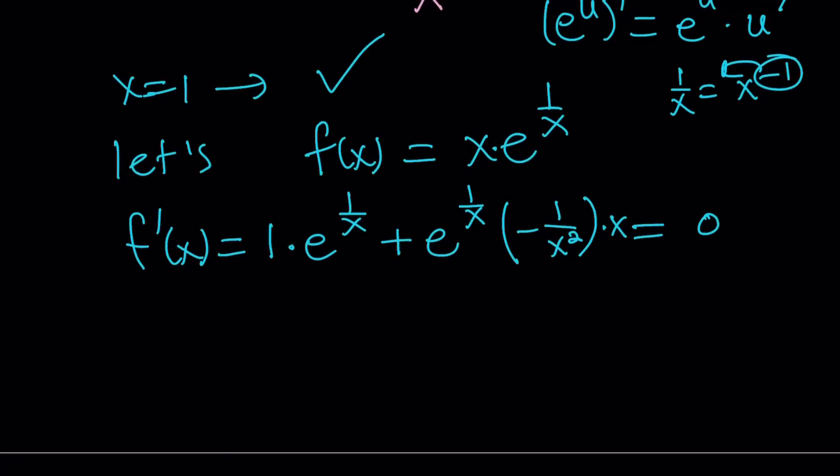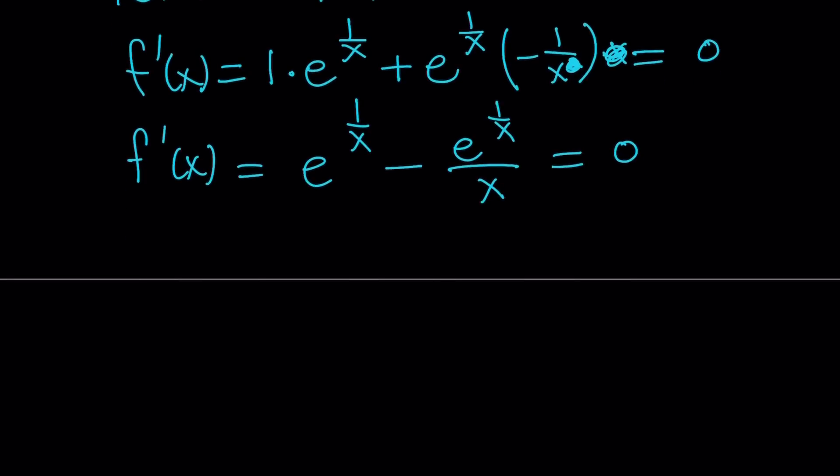Okay, so now, if you simplify this, x obviously is positive, it's not 0, so we can cross out the x's, and then we get f prime of x is equal to e to the power 1 over x minus e to the power 1 over x divided by x. This is kind of nice because we can make a common denominator and take out e to the power 1 over x, and then we should be getting x minus 1 over x equals 0.